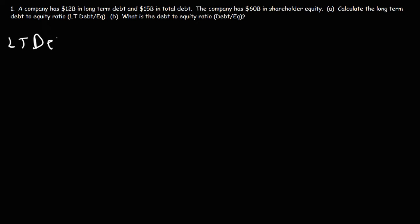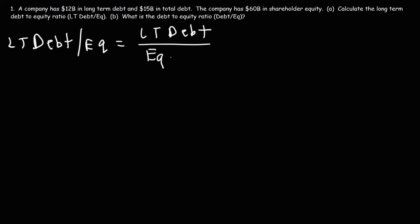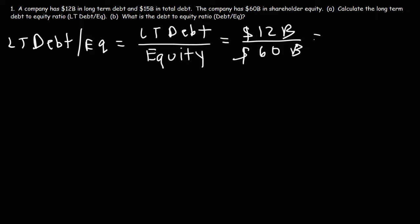So the long-term debt-to-equity ratio is going to be the long-term debt divided by the equity. This company has $12 billion in long-term debt and $60 billion in shareholder equity. So it's $12 divided by $60, which comes out to be 0.20.